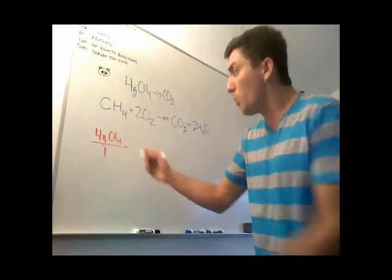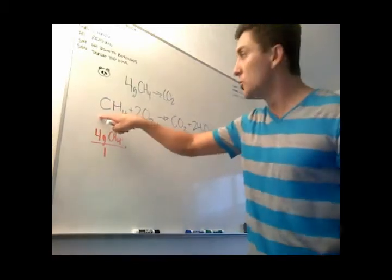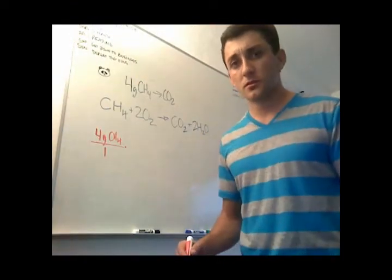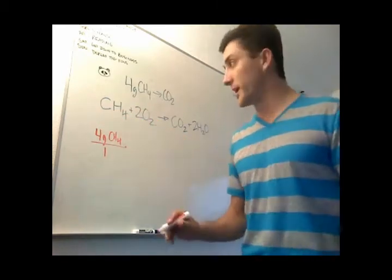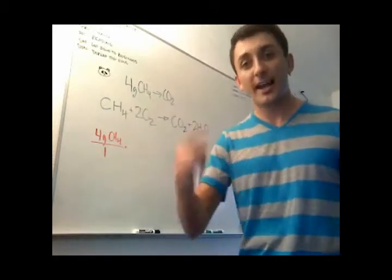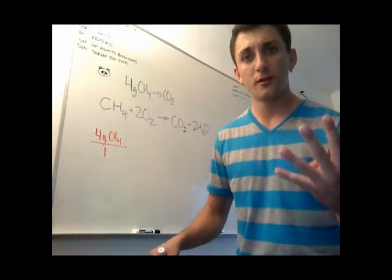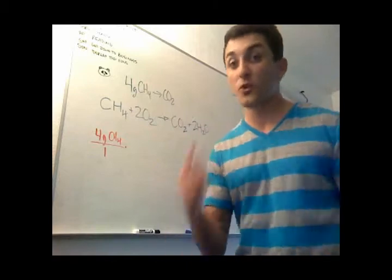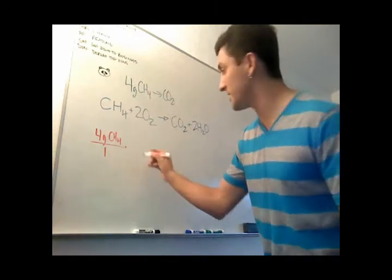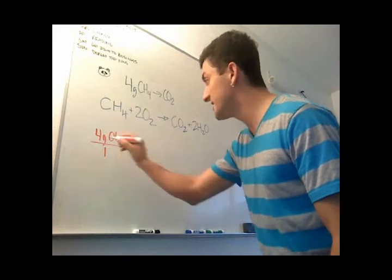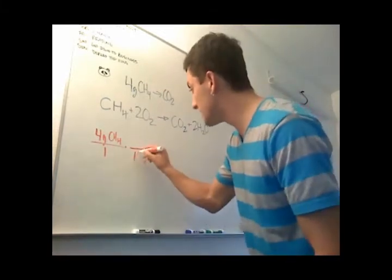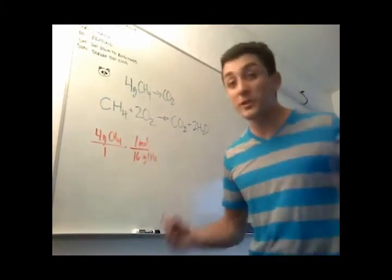Now I have 4 grams of CH4. I need to go from grams to moles. We look at CH4, we look at the periodic table. We need to find out what one molecule of CH4 weighs to go from grams to moles. Carbon has an atomic weight of 12. Each hydrogen has an atomic weight of 1. We have four, so 1 times 4 is 4. 4 plus 12 is 16. We want grams in the denominator, so we have 16 grams of CH4 per one mole.